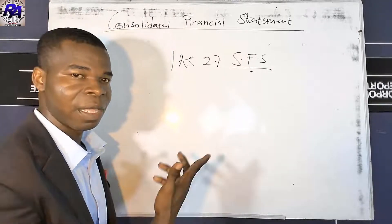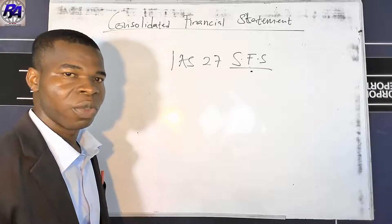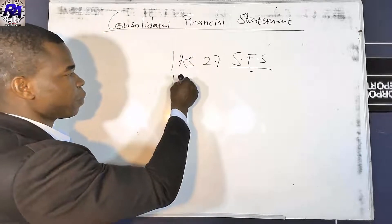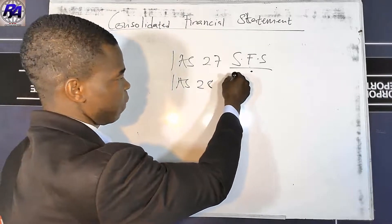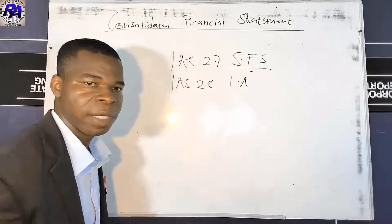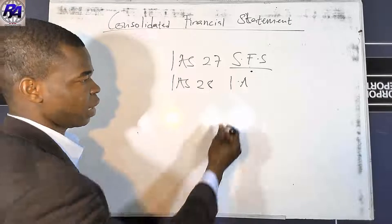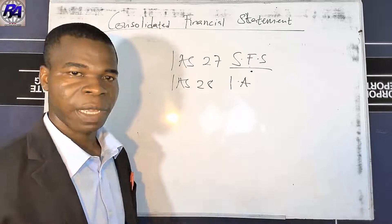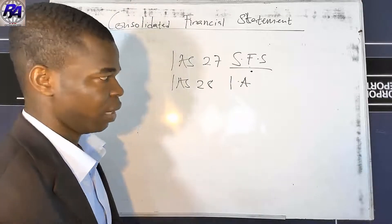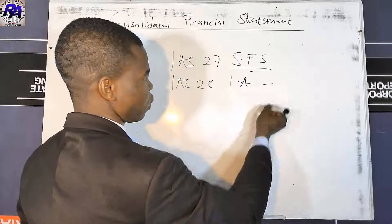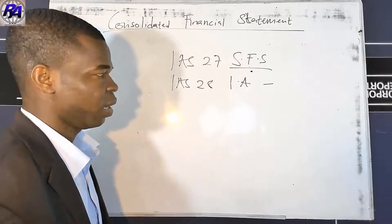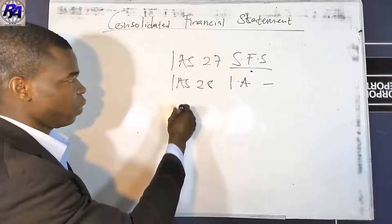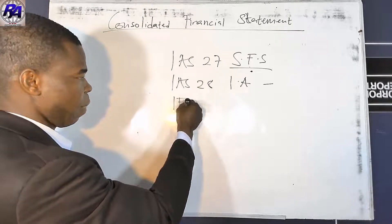By the close of this lesson you will know who a parent, acquirer, or investor is. We also have IAS 28, which covers investment in associates — accounting for an investment in associate. When we talk about an associate, we are looking at an entity that has obtained significant influence over another entity, where there is no control. We will go extensively into IAS 28 later.